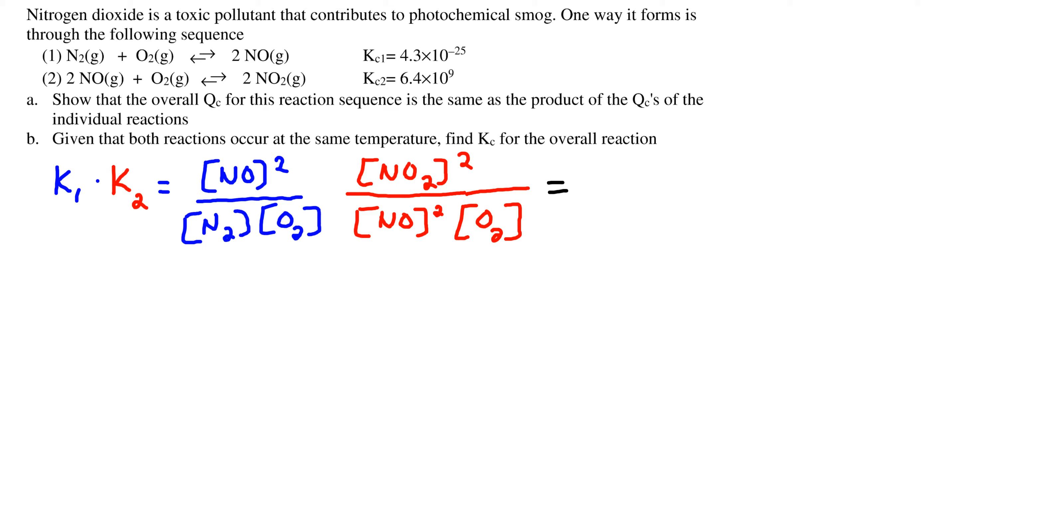So what we have here is K1 times K2, and we'll see here that the factor NO quantity squared is going to cancel out. So the product comes out to be NO2 squared over N2 and O2 quantity squared.